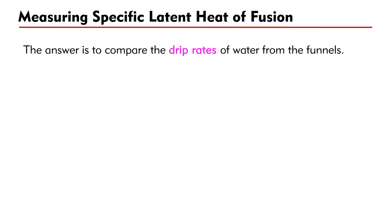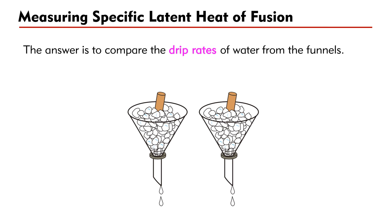A simple way to ensure that the two setups are identical is to compare the drip rates of water from the funnels. If the drip rates are the same, we can assume that the two setups are identical.